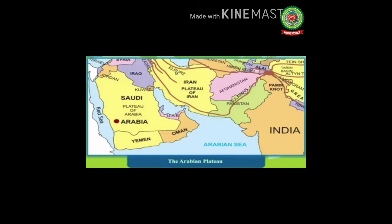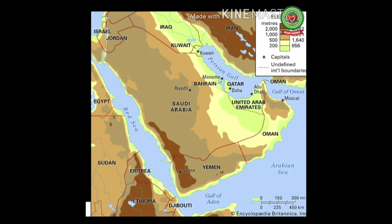Two water bodies border Saudi Arabia: the Persian Gulf to the east and the Red Sea to the west. The Red Sea is the warmest and saltiest sea in the world. The peninsula plays a critical geopolitical role in the Arab world due to its vast reserves of oil. Eastern Arabia consists of the entire coastal strip of the Persian Gulf.